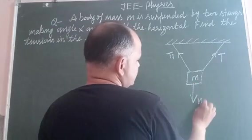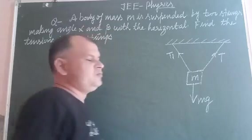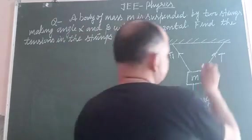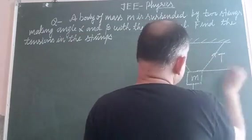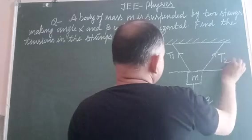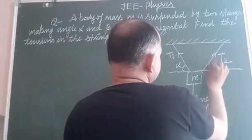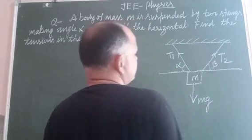The mass of this block works in downward direction and these tensions are making angle alpha and beta with the horizontal.